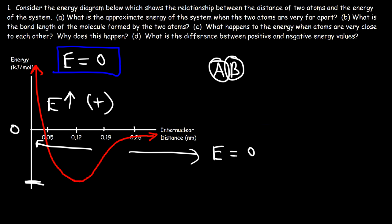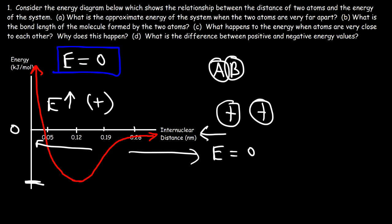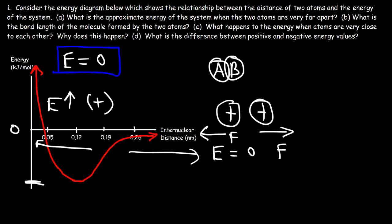Why does the energy go up when the atoms become very close? The nucleus of each atom contains a positive charge, so as the nuclei are brought close together you have proton-proton repulsion — these protons feel a force accelerating them in the opposite direction. There's also electron-electron repulsion, which also causes the atoms to separate. When atoms are so close the energy is very high and they repel, but at the right distance the energy is low and they attract, forming a bond and producing a molecule.